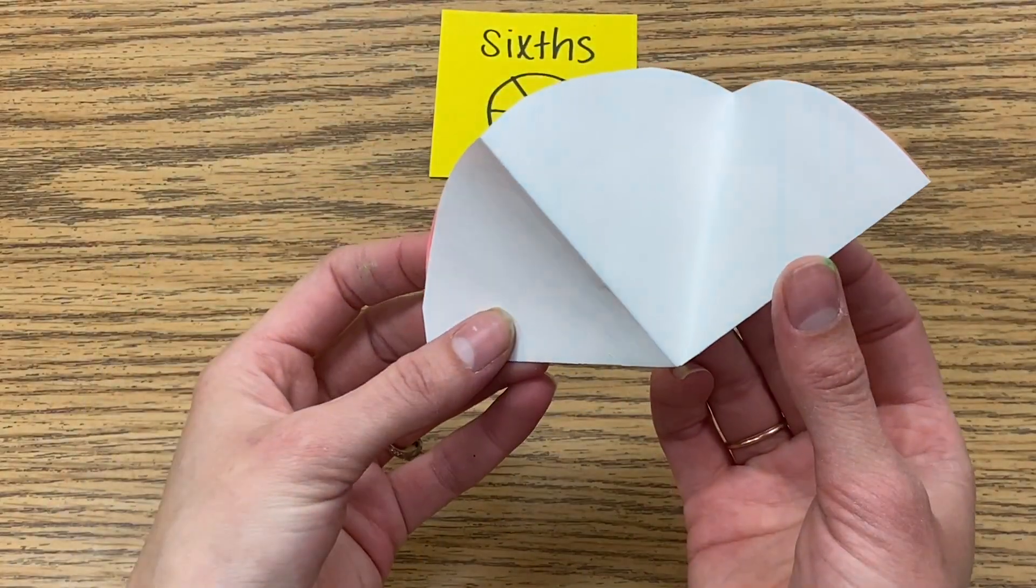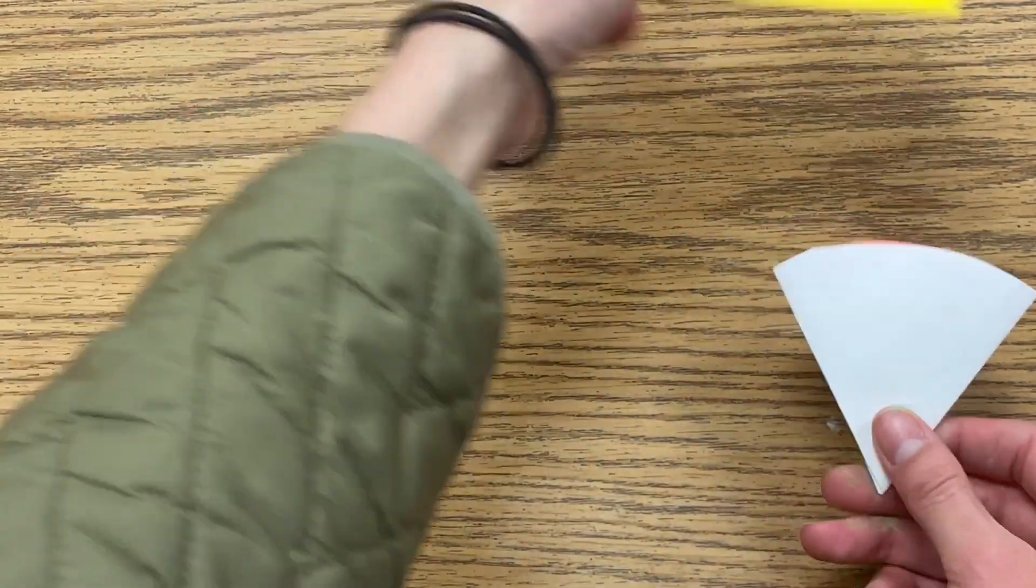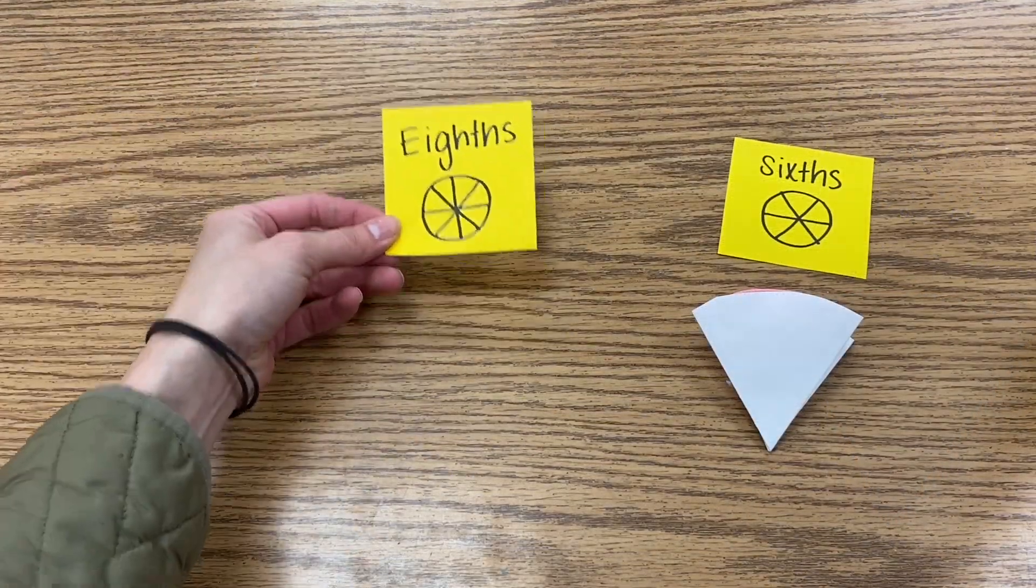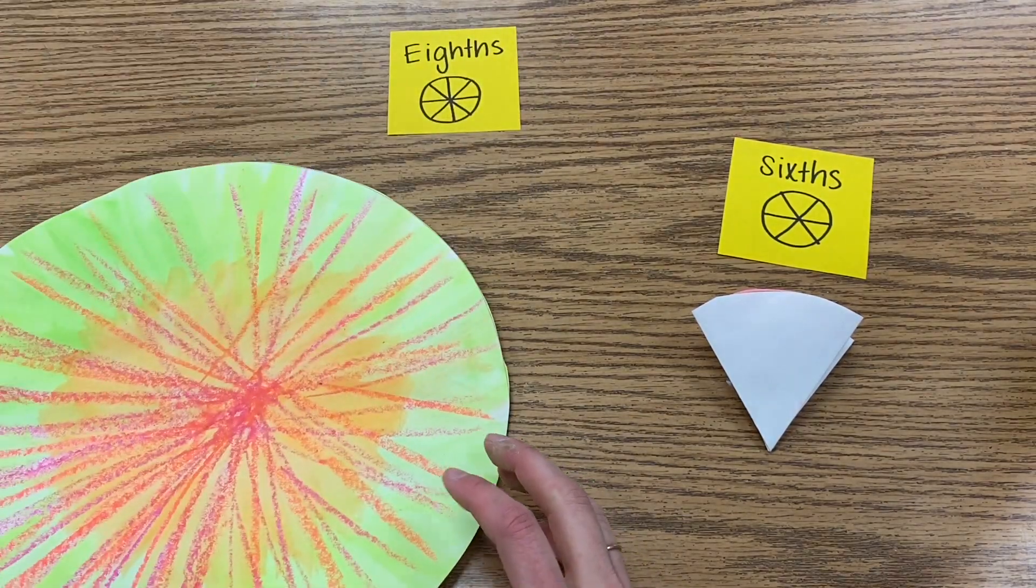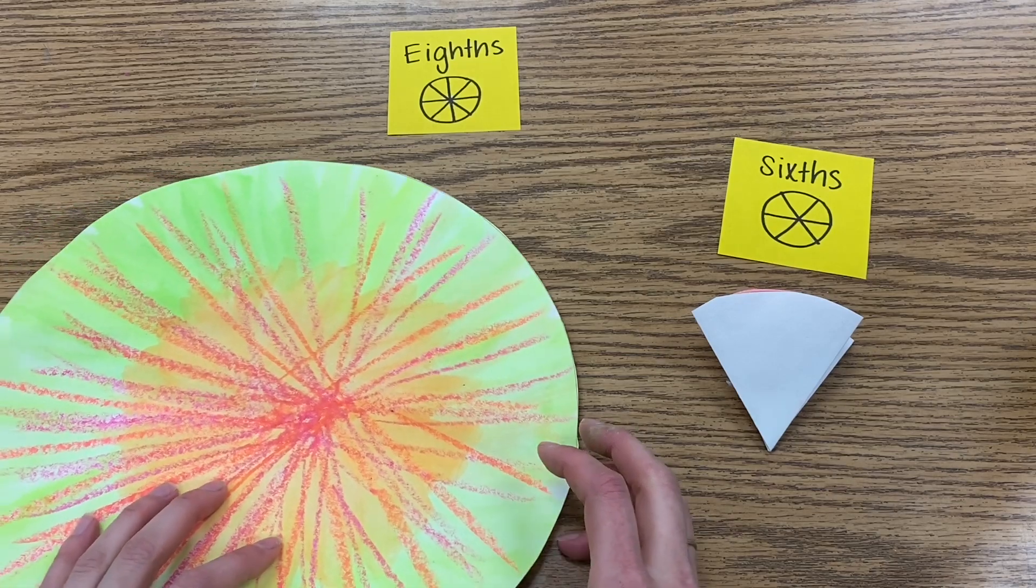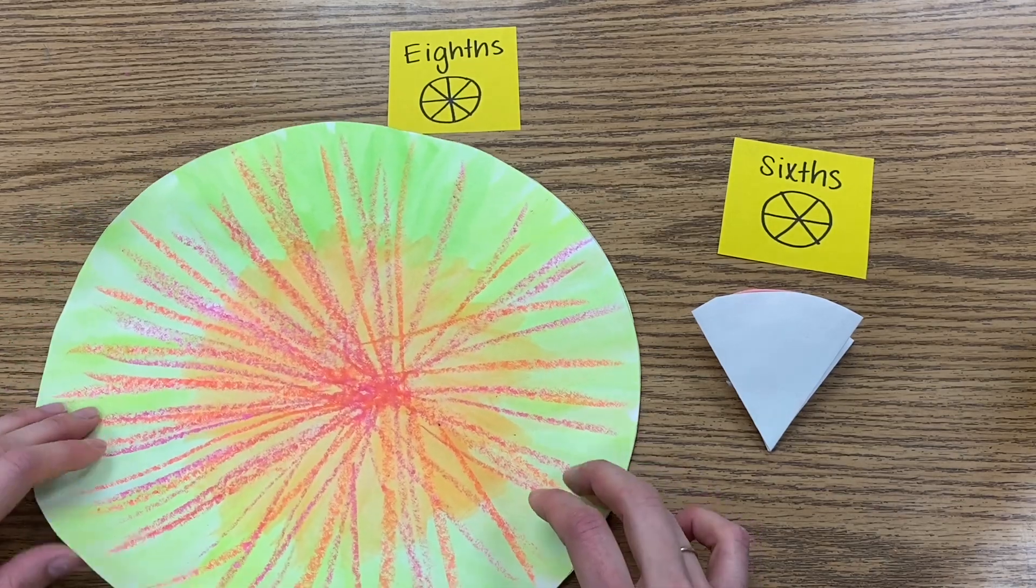So I have six parts and I'm going to set that one to the side. For my bigger circle I want to fold it into eighths. This is going to get tricky because this paper is kind of thick and it's going to get a little bit hard to fold at the end but eighths are a little bit easier.